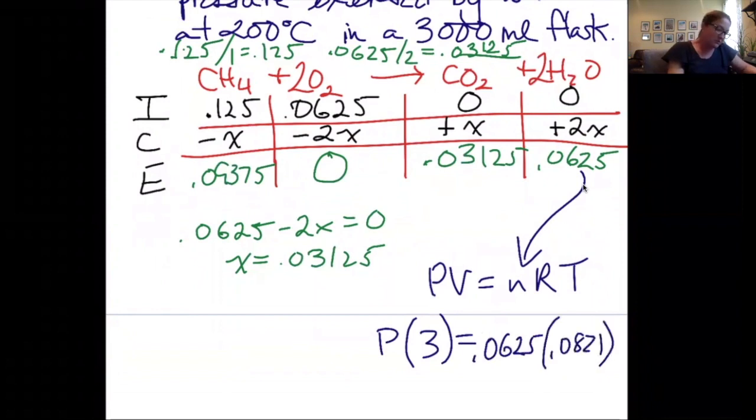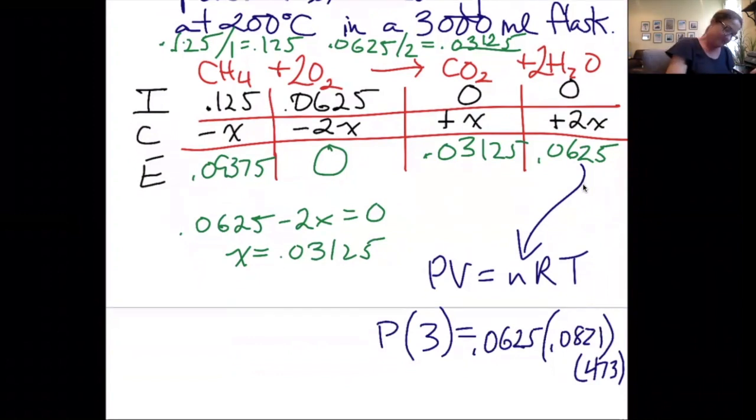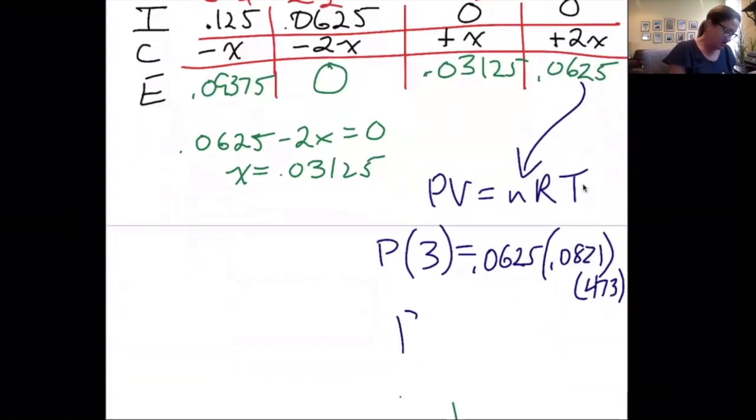And the temperature was 200 degrees Celsius, which is 473 Kelvin. So 0.0625 times 0.0821 times 473 divided by 3 liters gives me a pressure equal to 0.81 ATM.